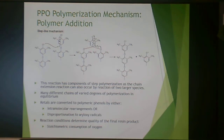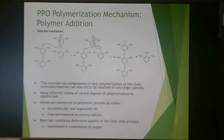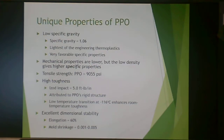There are varied degrees of polymerization in equilibrium. Ketals are converted to polymeric phenols by either intramolecular rearrangement or disproportionation to aryloxy radicals. The reaction conditions determine the quality of the final resin product, and the oxygen present — specifically its stoichiometric consumption — really determines that final resin.